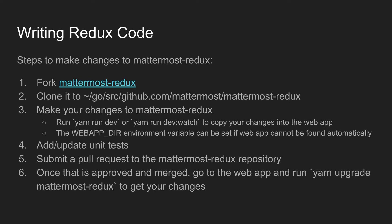When writing Redux code, it gets a bit more complicated because it's in a separate library, so you'll have to fork that yourself and clone it. If you clone it within the Go structure next to the web app and server, it makes life a lot easier — when you use the yarn run dev or yarn run dev watch command, it'll automatically find the web app and copy your changes into it so you can test them in a proper environment.